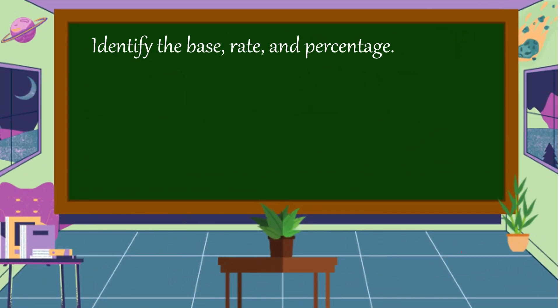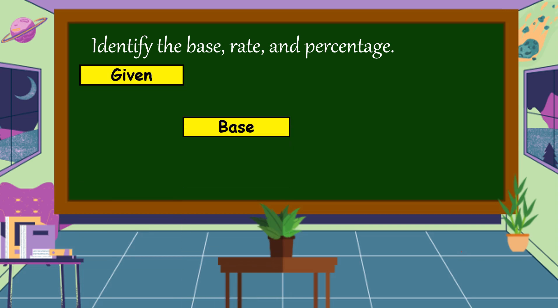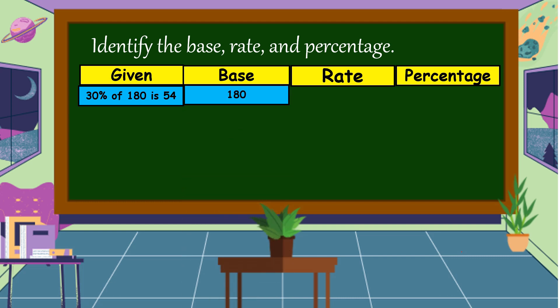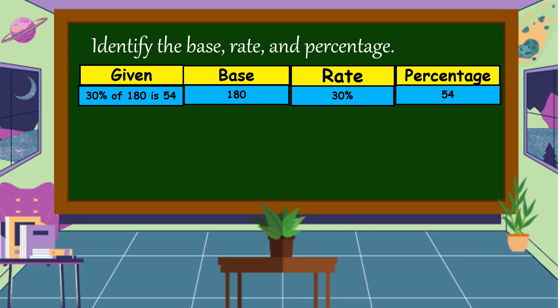First, identify the base, rate, and percentage. First example: 30% of 180 is 54. In this example, the base is 180, the rate is 30%, and the percentage is 54.